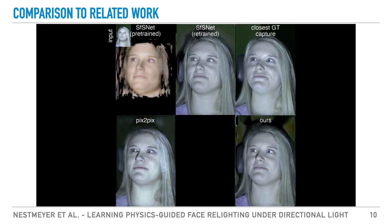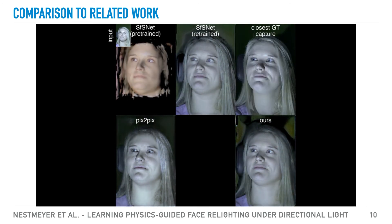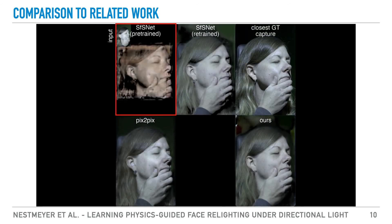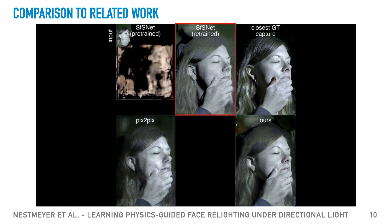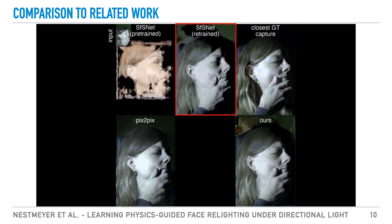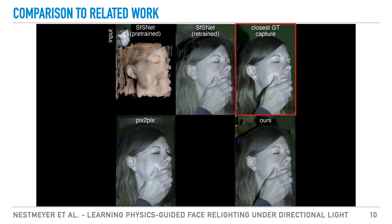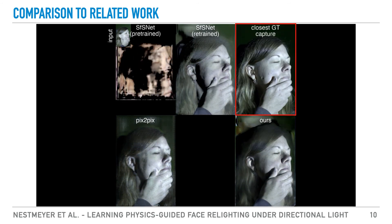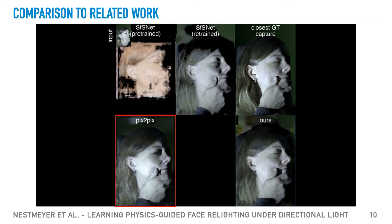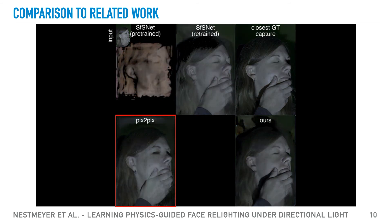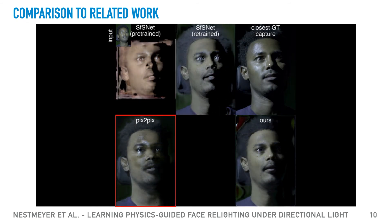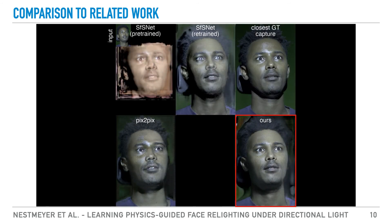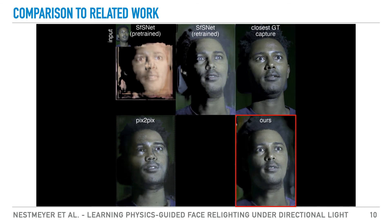We illustrate the benefits of our method in a comparison to related work. First, SFSNet, both pre-trained as provided by the authors and retrained on our dataset for fairer comparison. Inherent to this model is its diffuse reconstruction, which looks flat under directional light, as can be seen when comparing to the closest ground truth capture. The second work, Pix2Pix, has no structural constraints and can therefore predict specularities and cast shadows. However, its lack of intrinsic guidance often leads to physically inconsistent results. Our results on the lower right consistently outperform these methods.